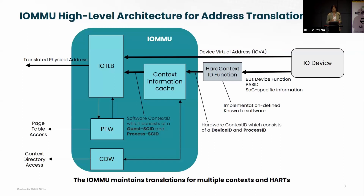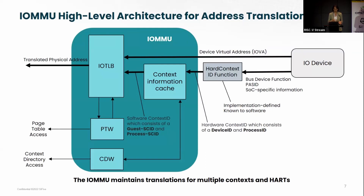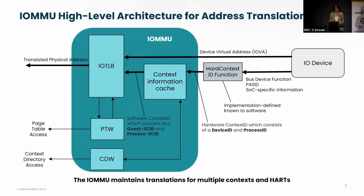The context information consists of the paging scheme, the page address of the page table, and a software context ID. The software context ID is useful for software to bind an ID with a translation rule that allows sharing of resources and reduces waste of the IO-TLB. Once the request comes into the IO-MMU with that ID, the first step is to look for the context. If it's local, we go to the next step, which is to go through the TLB — also called an IO address translation cache — to find the physical address. The job of the IO-MMU is then to perform permission checks. If there is a miss in either of these structures, there are context directory walks or page table walks, since all these structures are stored in system memory.